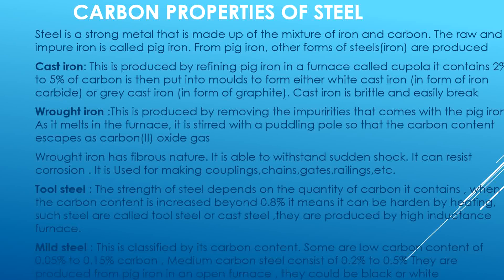Wrought iron is produced by removing the impurities that come with pig iron. It melts in the furnace and is stirred with a puddling tool so that the carbon content escapes as carbon dioxide gas. Wrought iron has a fibrous nature; it is able to withstand sudden shock, can resist corrosion, and is used for making couplings, chains, gates and rails.